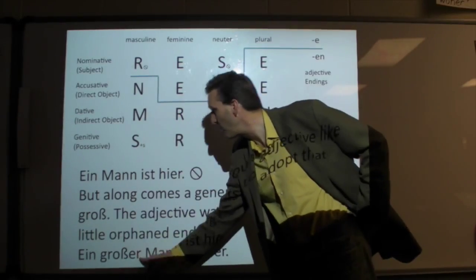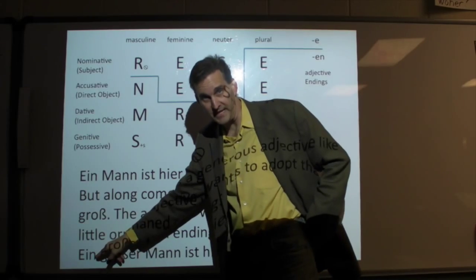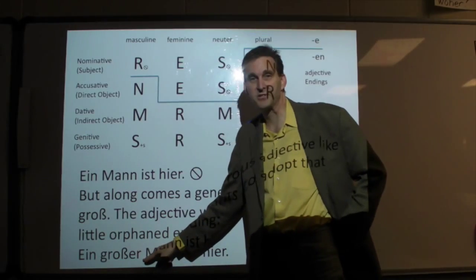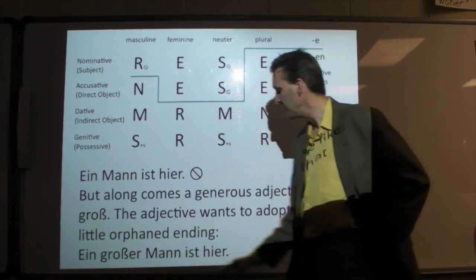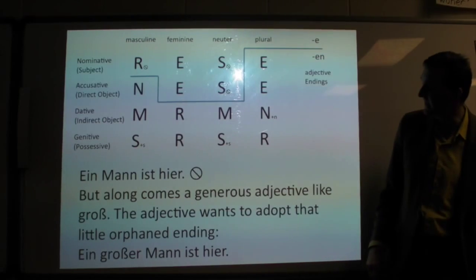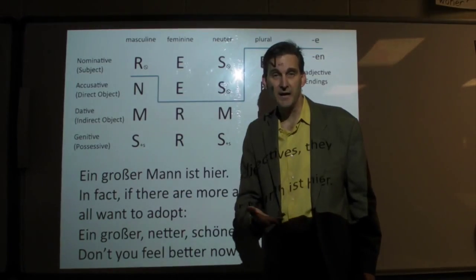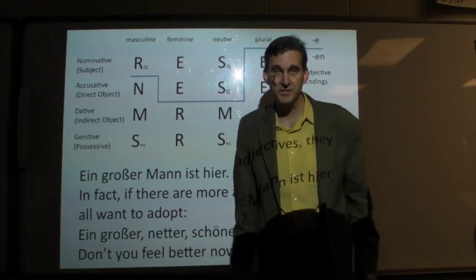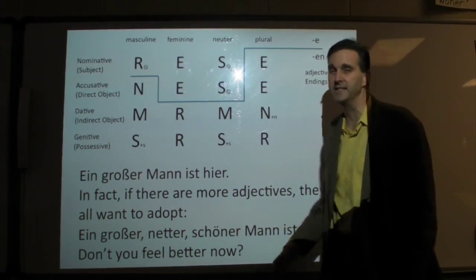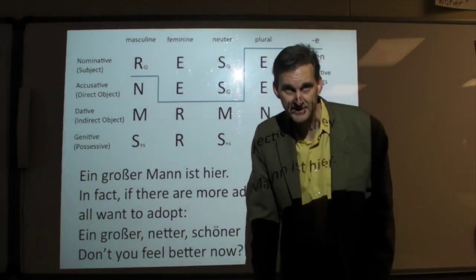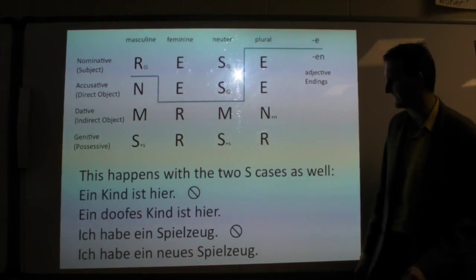So, Ein großer, there's that R showing up again. The Ein orphaned ending, but our very generous Groß here has adopted that ending. Now we have Ein großer Mann ist hier. That's how this works. In fact, if there's a string of adjectives, they all want to adopt that orphaned ending: Ein großer, netter, scherner Mann ist hier. I guess they just share custody or something. So, don't you feel better now about German?